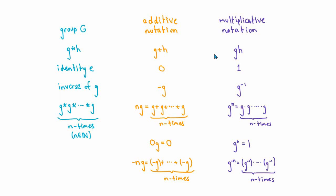Especially when working with a set like the integers, where there are two different natural ways to combine elements, you have to be careful not to get confused. The integers are only a group under addition and not multiplication. So if you were working with the integers as a group, that would be a cue that you probably want to think about it using additive notation.